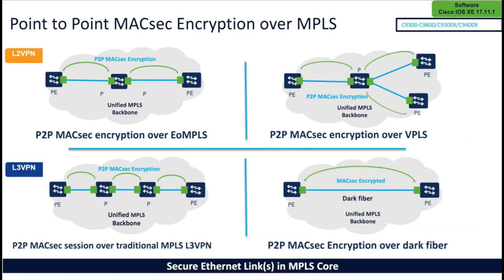Innovations in secure fabric solutions include point-to-point MACsec encryption over MPLS links. This feature supports Layer 2 and Layer 3 MPLS VPNs, as well as MPLS over dark fiber.